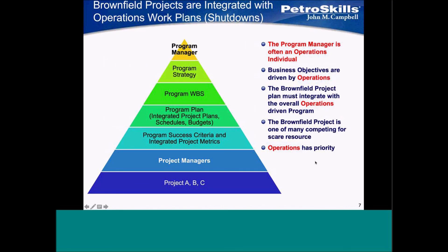So this gives you an idea of where, very candidly, a project engineer or project manager doing a brownfield project sits in the hierarchy with respect to a shutdown or turnaround. Who typically runs the turnaround? Depending on the size of your unit, you can have somebody from the turnaround group, or it could be a program manager — typically a very senior operations person.